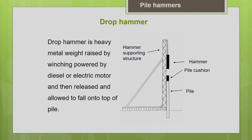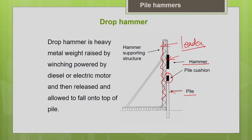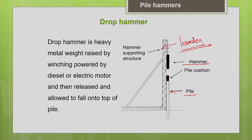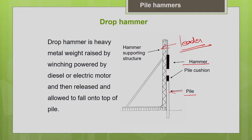Looking at the setup: this is your hammer, this is your pile, and in between the hammer and pile you have the pile cushion to control pile driving stress and protect the pile head from damage. There is also a supporting frame structure called the leader or lead, which helps to place everything in the right position, hold the pile and hammer, and maintain alignment. For pile driving, you cannot use the pile hammer alone — you need supporting equipment like a crane and a leader to hold everything in position.